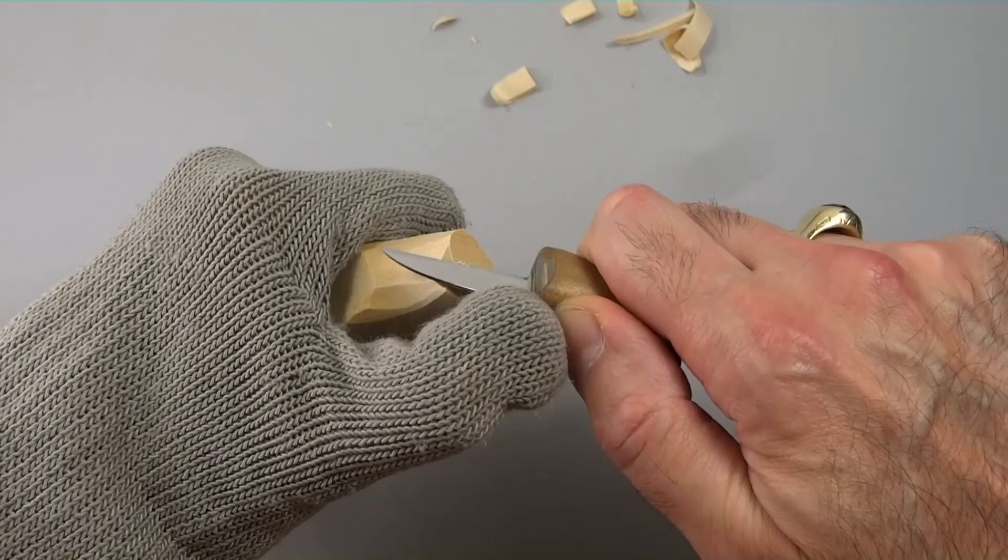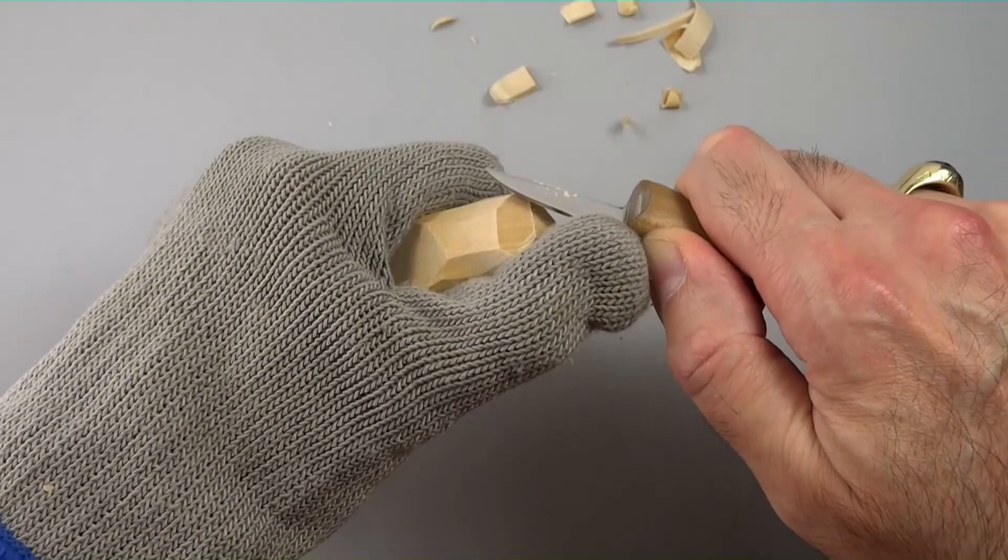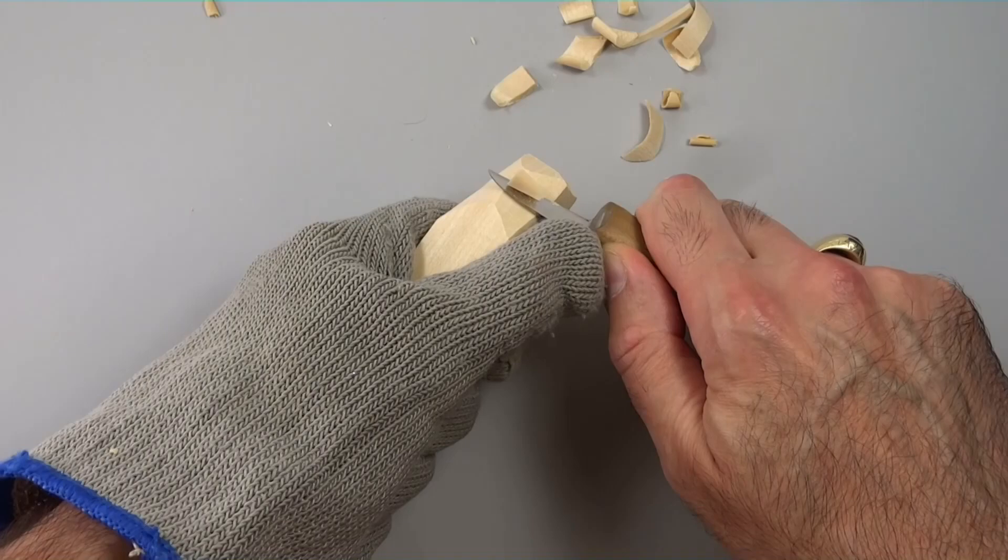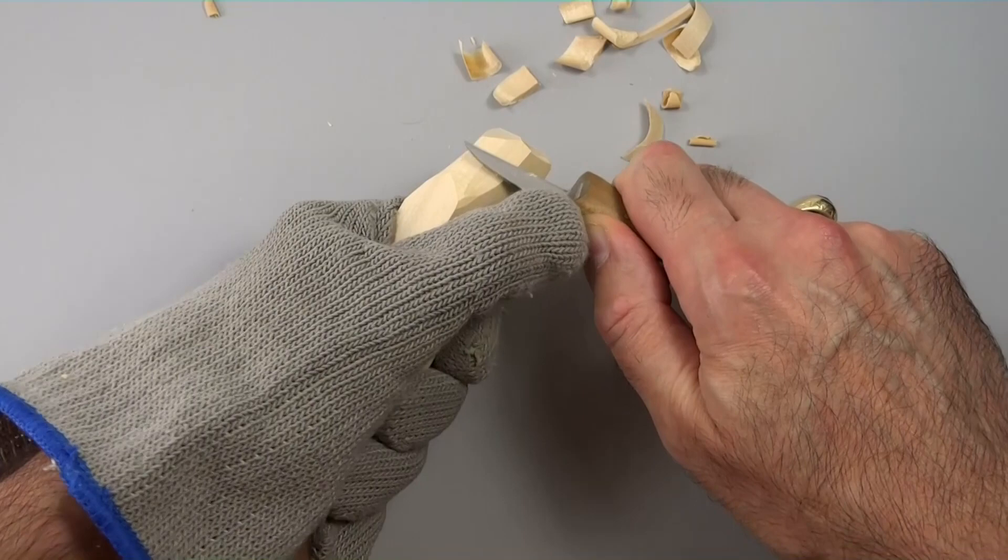This is called carving across the grain. So again, this is called a push cut, and you're using this thumb to push the knife through the wood while this hand steers the knife.